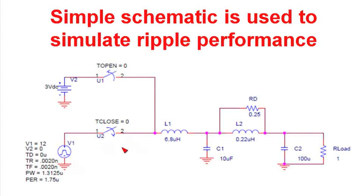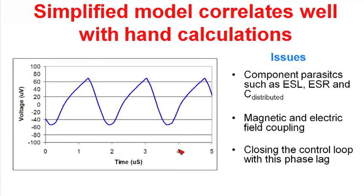And then after a portion of time, you can take a look at the output ripple out of the power supply. And this prediction says that we're going to get about 100 microvolts peak to peak on the output of the power supply.